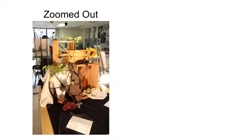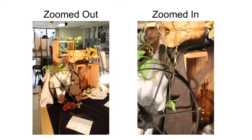This photograph is with the lens completely zoomed out — you can see all of the objects along with the classroom in the background. This photograph is of the same subject but completely zoomed in; you do not see all of the objects nor the classroom in the background. By zooming in, you can crop your subjects in a very interesting way.